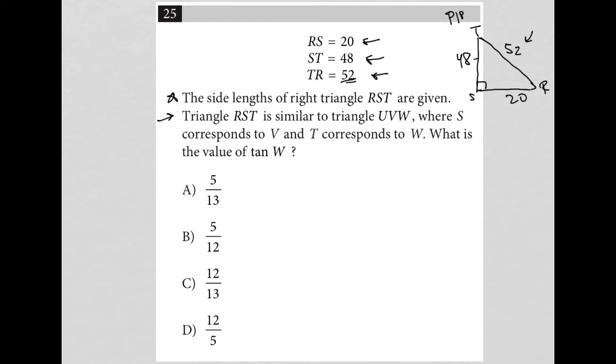The next sentence here says triangle RST is similar to triangle UVW, so we have another right triangle. And now, we're going to follow the same order, right? So, wherever R is, is where U should go, so U is here. S and V go together, so V is at the right angle, and W must be up here, where S corresponds to V and T corresponds to W. So, it kind of told us that information as well.